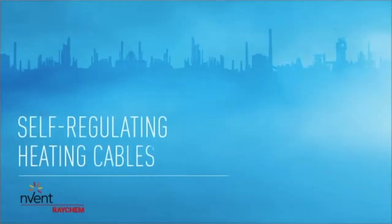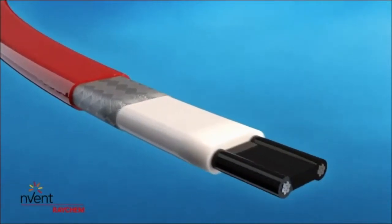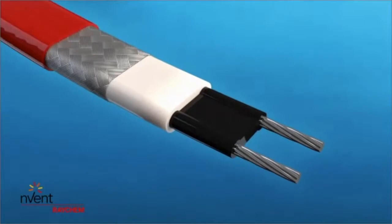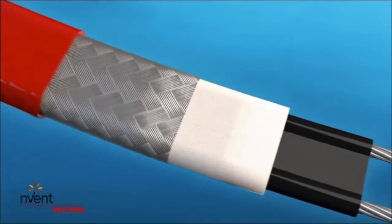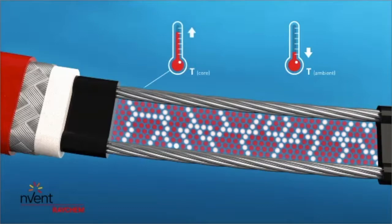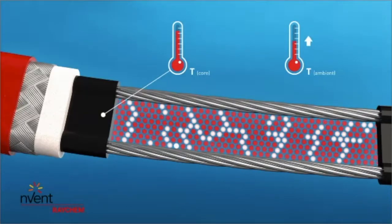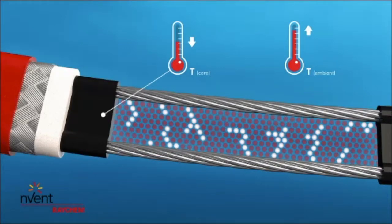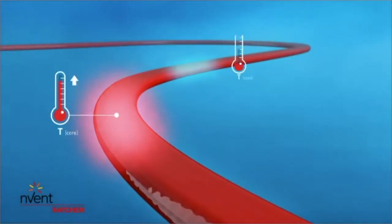Raychem self-regulating heating cables automatically adjust their power output to compensate for temperature changes. The outer jacket, braid, and inner jacket provide mechanical, chemical, and electrical protection. But the magic happens in the conductive core that surrounds the two parallel conductors. As the ambient temperature drops, the core contracts microscopically and the number of electrical paths through the core increases — more heat is produced. Conversely, as the ambient temperature rises, the core expands and has fewer electrical paths — less heat is produced. At a certain temperature, almost all electrical paths are disrupted and power output is close to zero. A self-regulating heating cable adjusts its power output along its entire length, making it a safe and reliable solution for many applications.